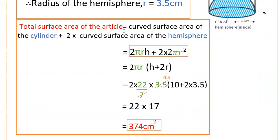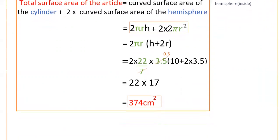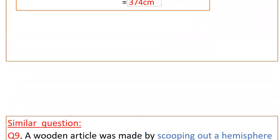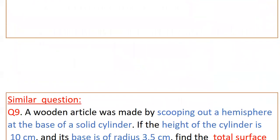So 374 square centimeters is the total surface area of the article. Now please try a similar question on your own.